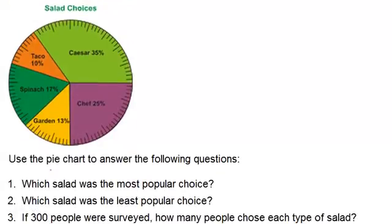Use the pie chart to answer the following questions. One, which salad was the most popular choice? So if we want to know what's most popular, that means which section of our pie takes up the biggest area? And I can see that would be the Caesar salad, 35 percent, is the biggest of all the percentages. So Caesar salad was the most popular.